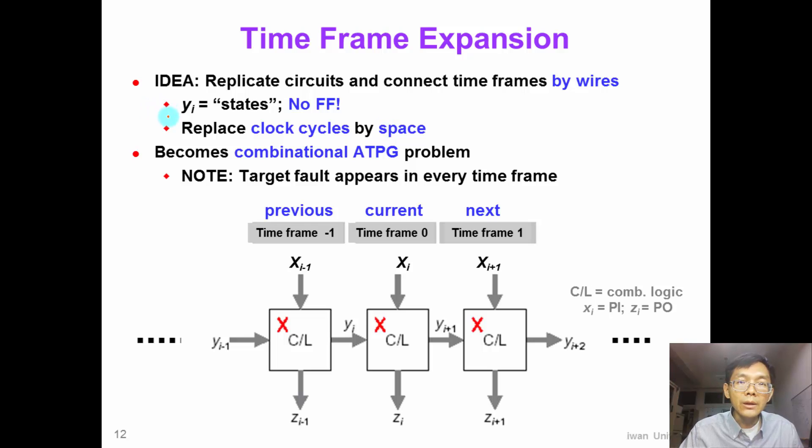The idea of time frame expansion is very simple. We simply replicate the circuit and connect these multiple copies of time frames by wires as is shown in this figure. We replicate this circuit into three copies. The right time frame represents the future, the next cycle.